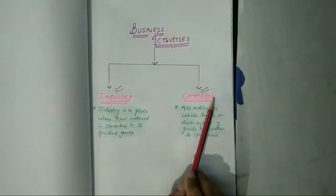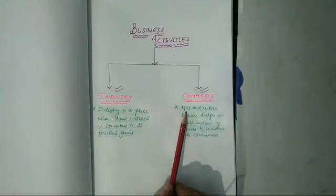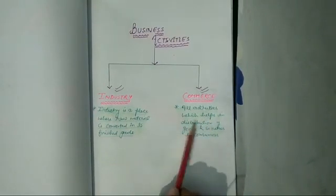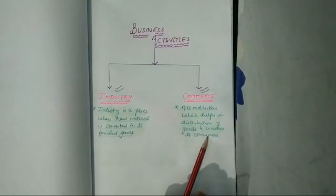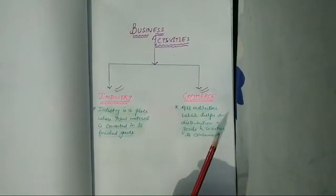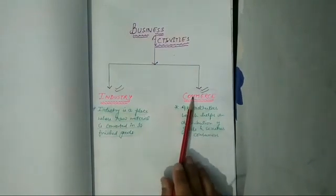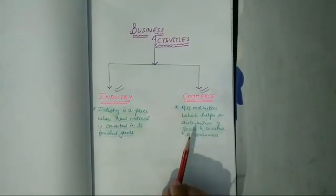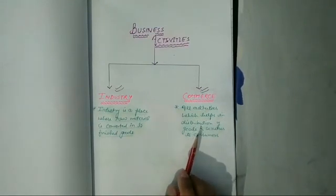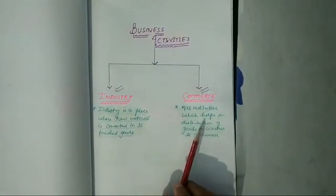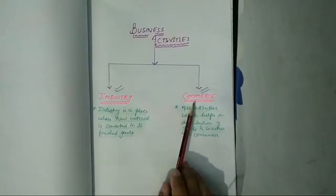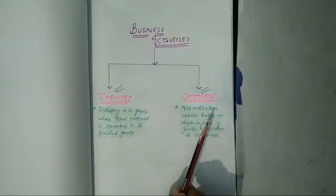The second category is commerce. What is commerce? Commerce refers to all activities which help in the distribution of goods and services to the consumer. It means all activities which help in the distribution of goods and services from the manufacturer to the consumer come under the category of commerce. For example, transportation, warehousing, communication, banking, insurance, and advertising — all these activities come in the category of commerce. In other words, we can say that commerce includes buying and selling of goods and services, as well as the activities which help in buying and selling of goods and services.